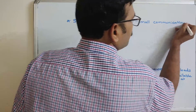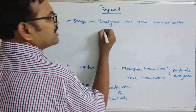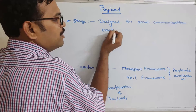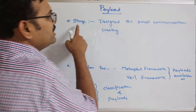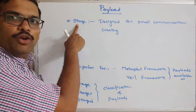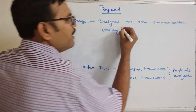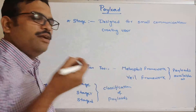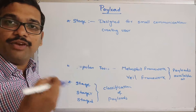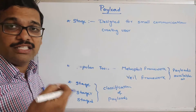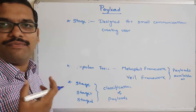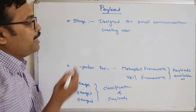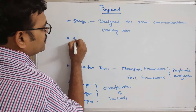The first category is Stage, and it is designed for small communication — for example, just like creating a user. By using this Stage payload we can establish a small kind of communication.